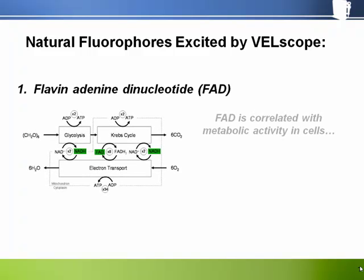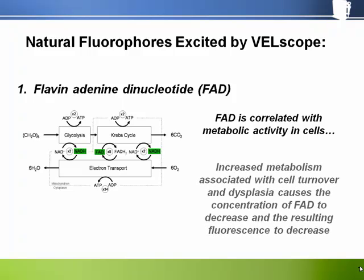There are five main fluorophores excited by blue light in oral mucosa. The first is Flavin Adenine Dinucleotide, or FAD, thought to be the major contributor to epithelial fluorescence under blue light excitation. It is a coenzyme involved in the Krebs cycle and is correlated with metabolic activity in cells. When a cell is actively metabolizing, there is a lower concentration of FAD. Therefore, dysplasia or cancer cells, which are generally more metabolically active than normal cells, exhibit less FAD fluorescence than normal.